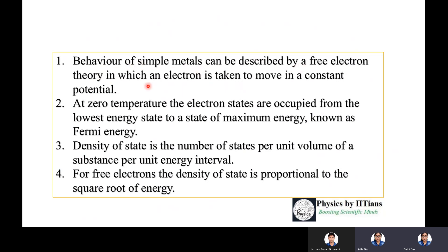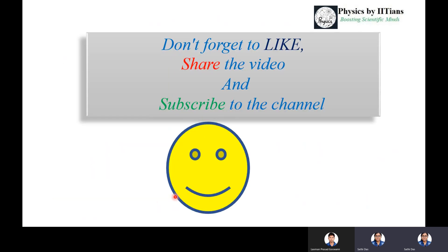In summary, the behavior of simple metals can be described by free electron theory, where an electron moves in a constant potential. At zero temperature, electron states are occupied from lowest energy up to the Fermi energy. Density of states is the number of states per unit volume per unit energy interval, and for free electrons the density of states is proportional to the square root of energy.